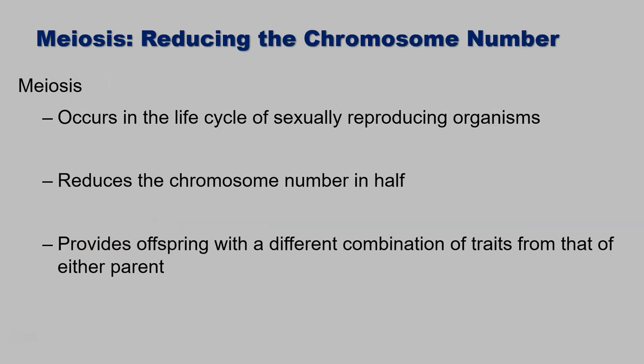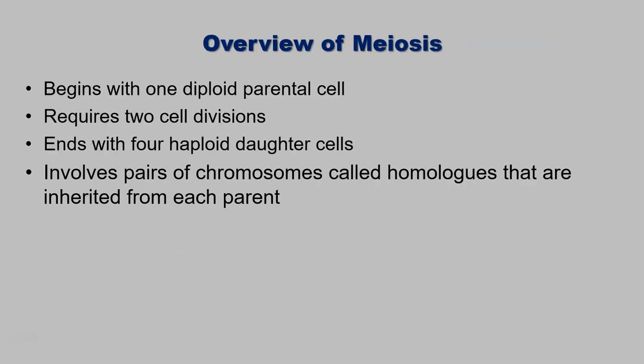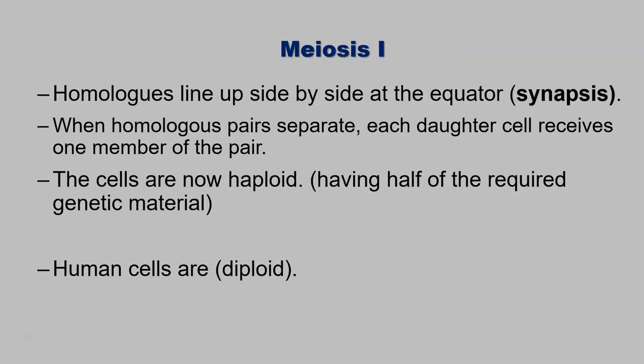Some other things about meiosis: it occurs in the life cycle of only sexually reproducing organisms. If you're an asexually reproducing organism, you will not go through meiosis. Of course, it reduces the chromosome number in half, and it provides the offspring with different combinations of traits from either of their parents. Homologs are chromosomes that have the exact same types of genes on each of them, so perhaps genes for hair color or eye color.